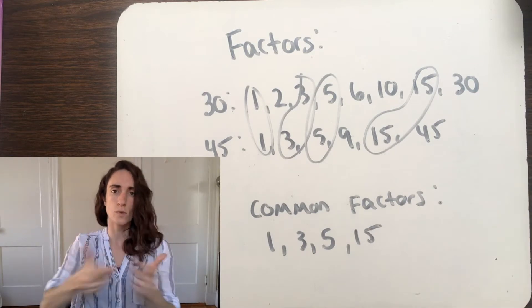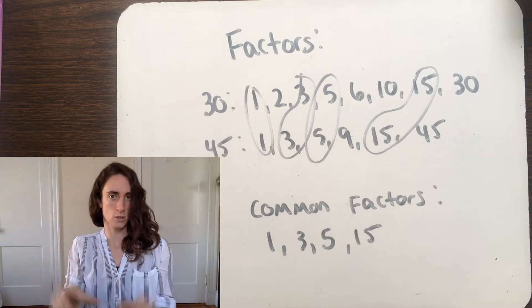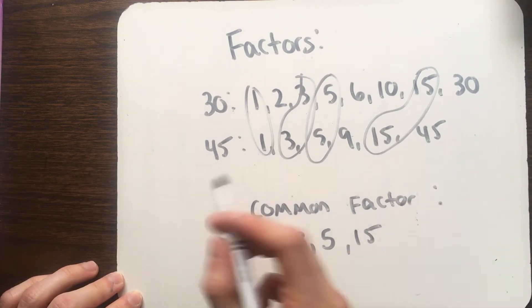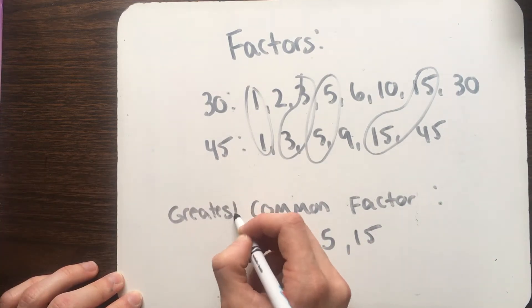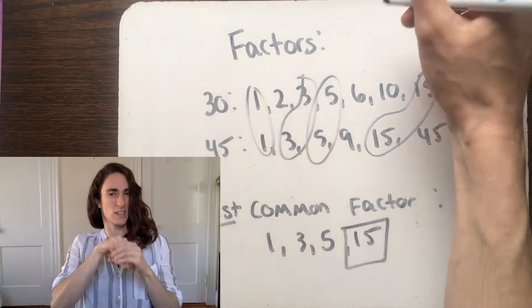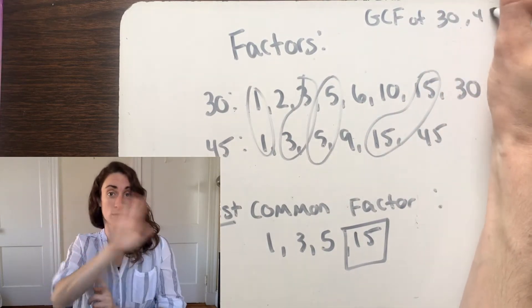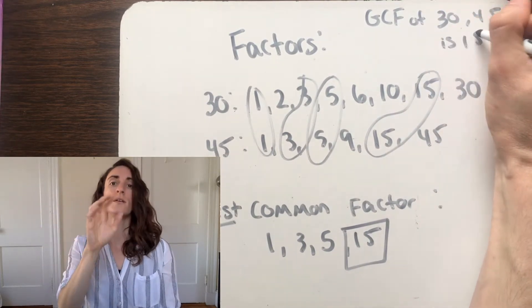Now remember that we're looking for the greatest common factor, or the largest common factor. So of these four common factors, 1, 3, 5, and 15, which is the largest? The largest of the common factors these two numbers share is 15, so that means the greatest common factor, or GCF of 30 and 45, is 15.